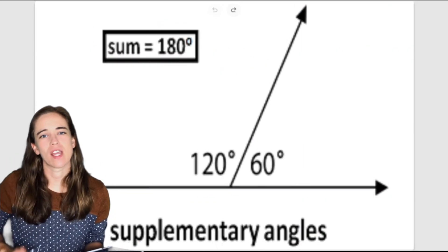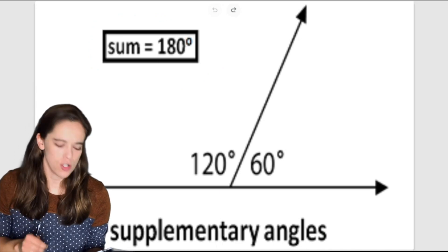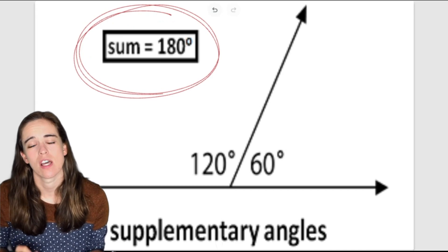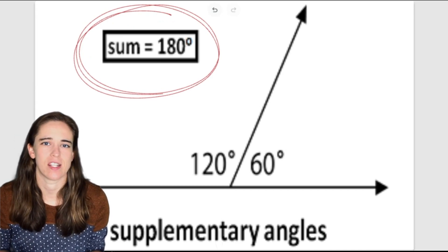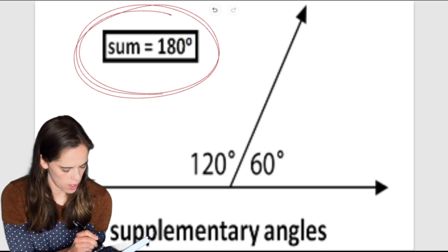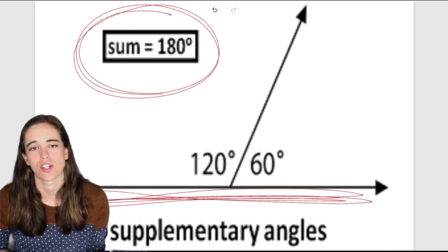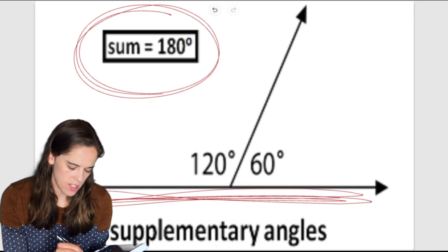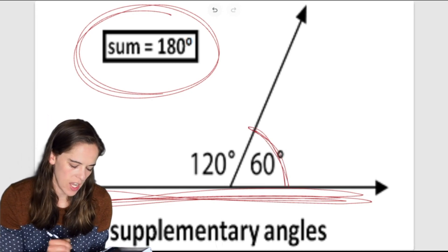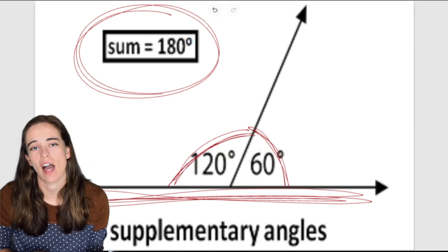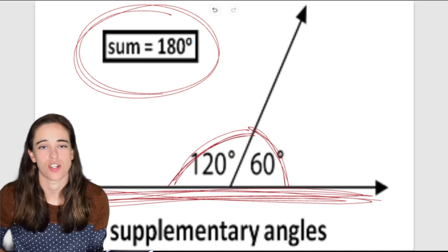All right we have four angle relationships for you today. The first one is supplementary angles and supplementary angles simply are two angles that add to 180 degrees. And the key thing to look for is this straight line because straight lines are 180 degrees. So in this example we have a 60 degree angle and a 120 degree angle and that adds up to our total of 180.